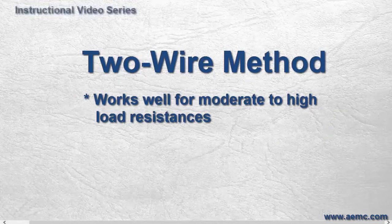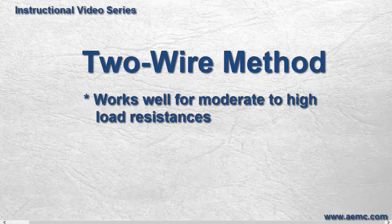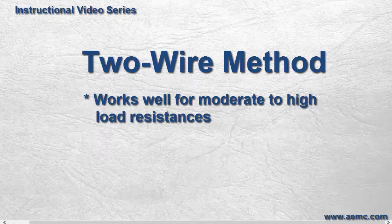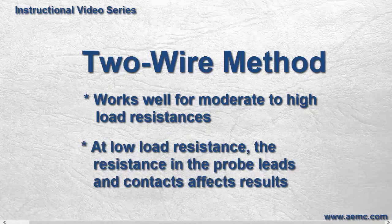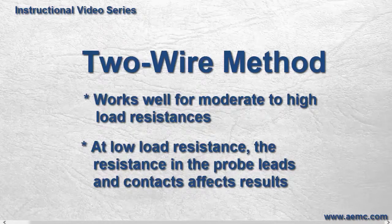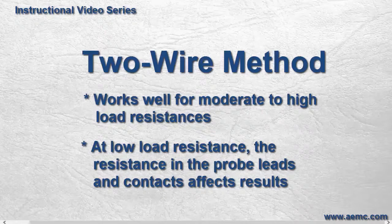The two-wire method works well for moderate to high load resistance or impedance. However, for very low load resistances, the resistance inherent in the probe wiring and contacts can contribute a significant percentage to the overall results, making the measurement of the test load resistance inaccurate.